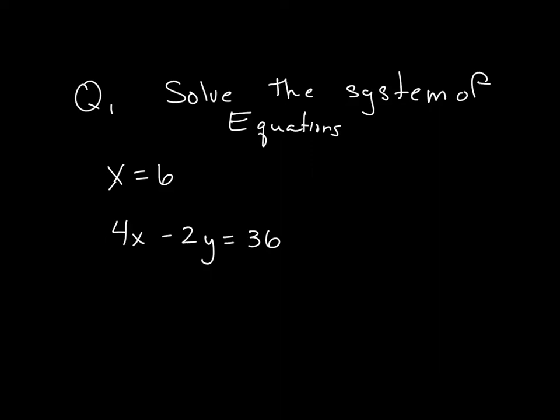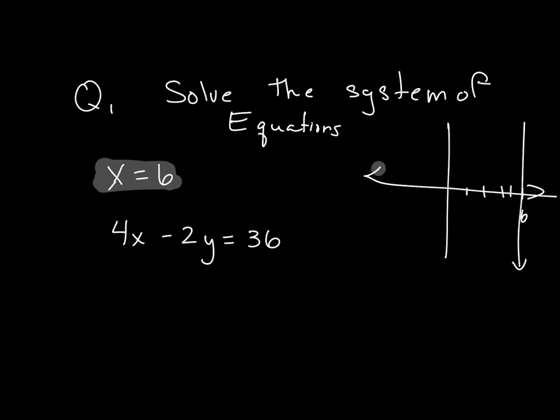This is a systems of equations. The one difference with this one is you'll see this is x equals 6. Now, the x equals 6 does graph, and it just goes over here at 6, and that is a straight up and down line.